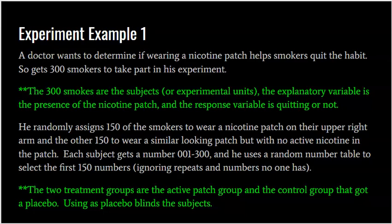Here's example one. A doctor wants to determine if wearing a nicotine patch helps smokers quit the habit. He gets 300 smokers who take part in the experiment. The 300 smokers are the subjects, or experimental units. The explanatory variable is the presence or absence of the nicotine patch, and the response variable is quitting or not — a categorical yes or no. The explanatory variable, did you wear the patch, is also categorical.